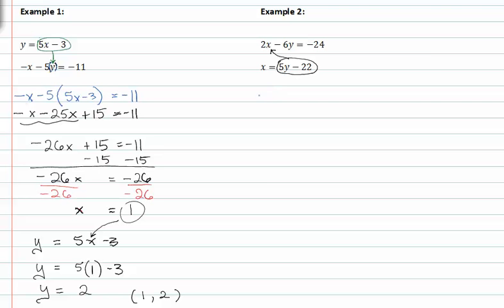When I do this, I'll have two times five y minus twenty-two minus six y equals negative twenty-four. From here, I'll just distribute and solve for y.